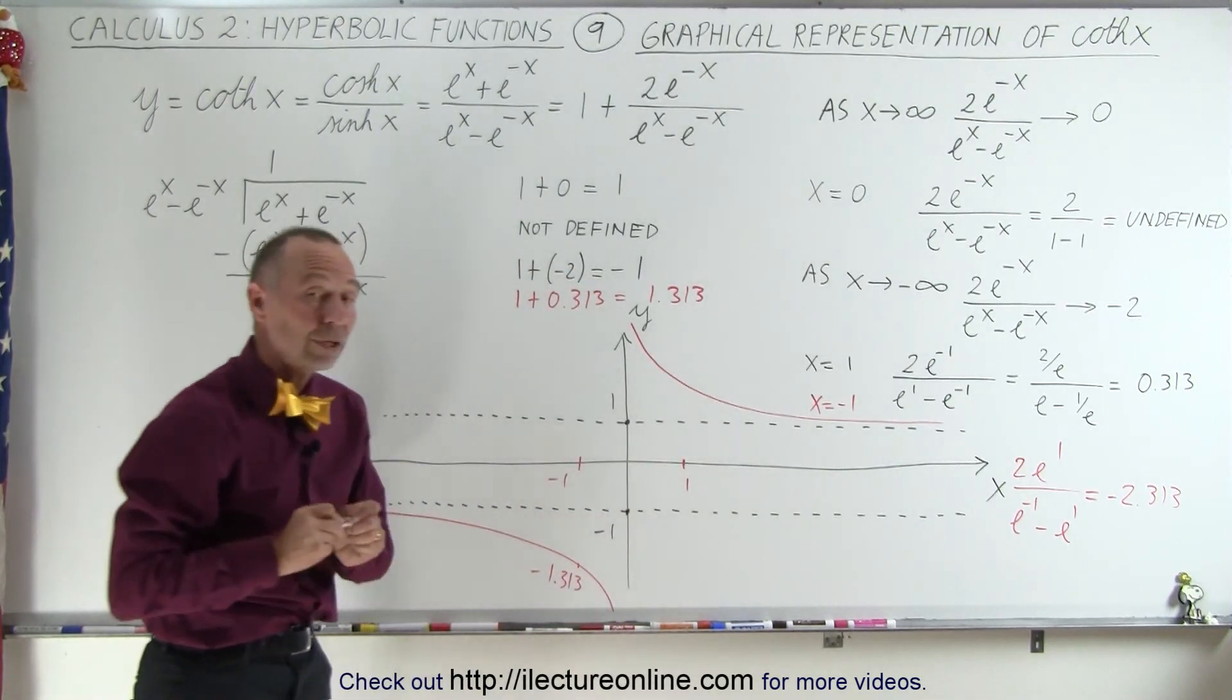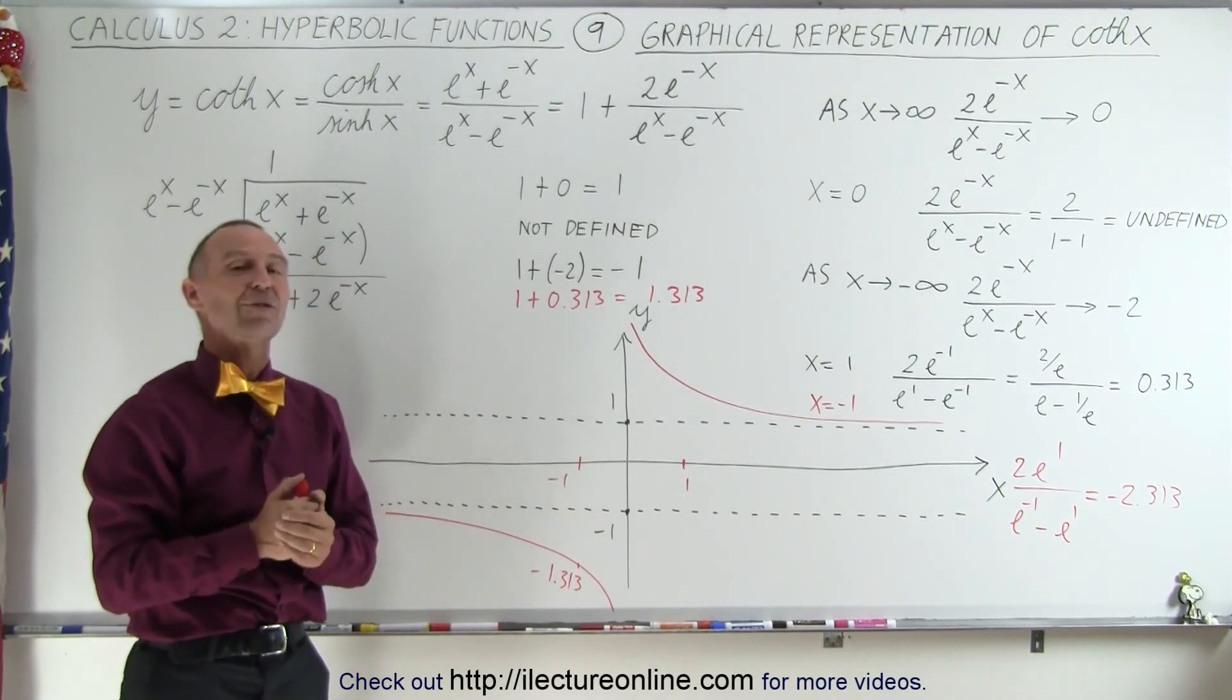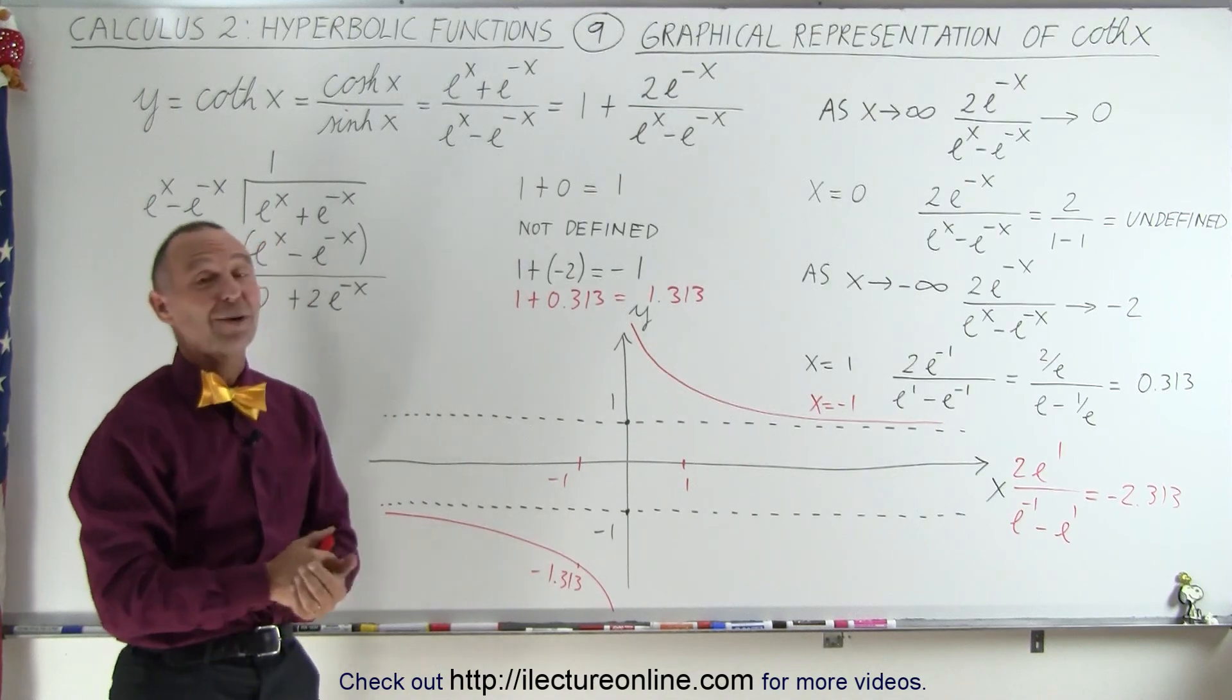This confirms we didn't make a mistake, and that's a good representation of the hyperbolic cotangent of x. That's how it's done.